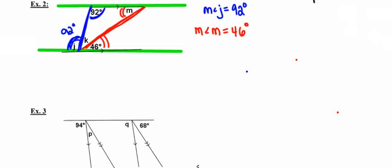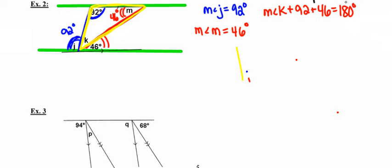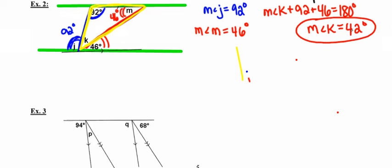The last thing I need to find is the measure of angle K. I'm going to use the yellow triangle, since all angles in a triangle total 180 degrees. I know two of the three angles, so angle K plus 92 degrees plus 46 degrees equals 180 degrees, making angle K equal to 42 degrees. As a quick check: 42 plus 92 plus 46 does indeed total 180, so we're good.